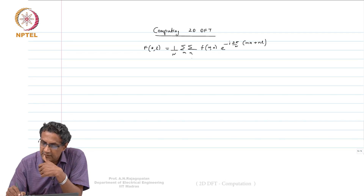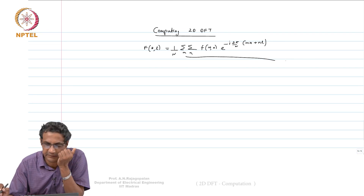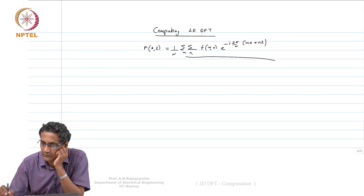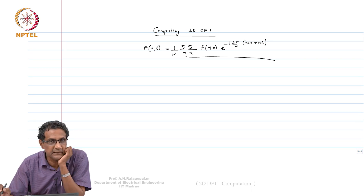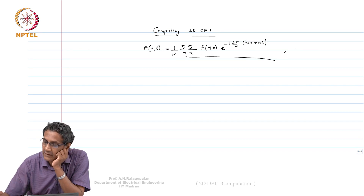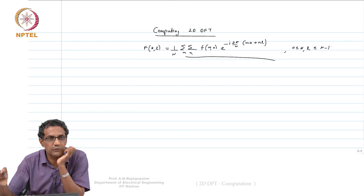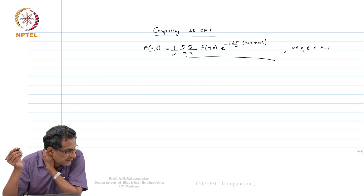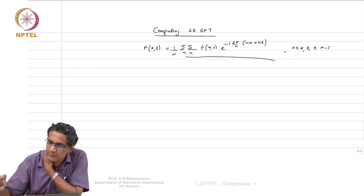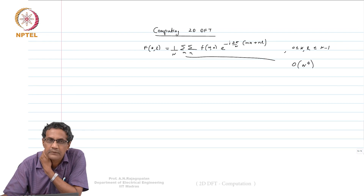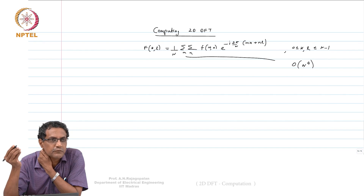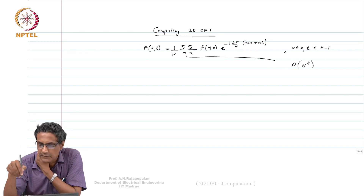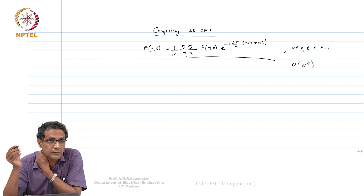The inner sum itself involves N squared arithmetic operations, because you have to do multiplications and additions. K and L also have to be computed for every value of K and L — F has to be computed for every value of K and L. So you are looking at something like order N to the power 4. If you do a brute force 1D DFT it is order N squared, but here for 2D DFT it looks like you may have to do something like order N to the power 4.